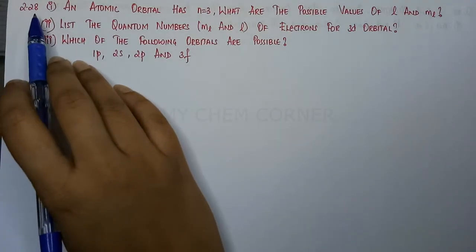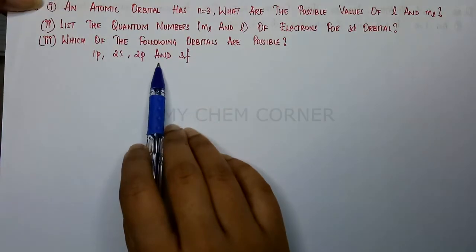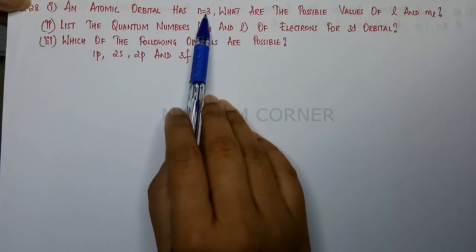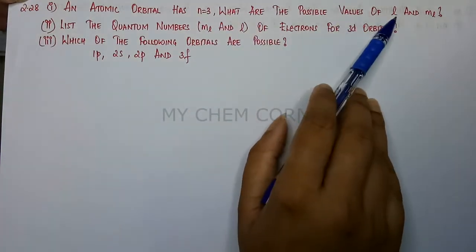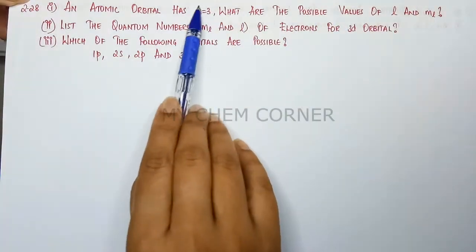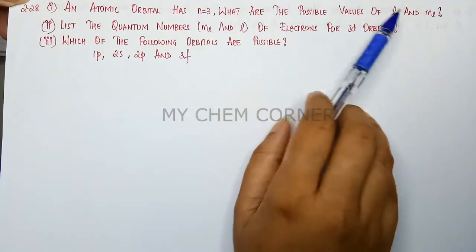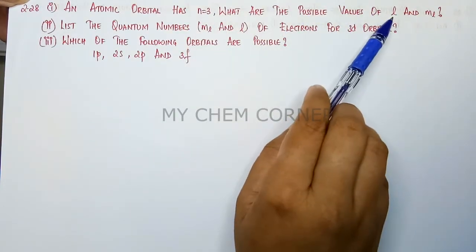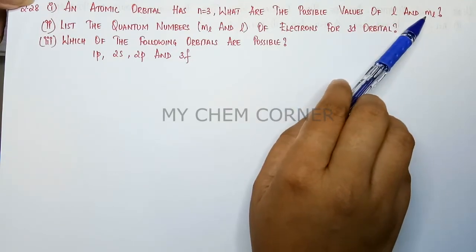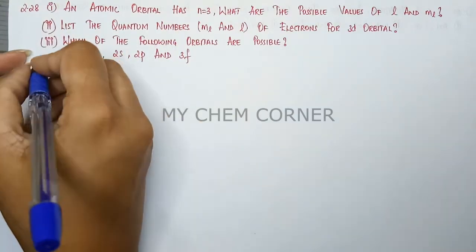Next is question number 2.28. There are three sets of questions we will solve one by one. The first says: an atomic orbital has n equal to 3. What are the possible values of l and ml? Here n equal to 3 is given, and we need to find the azimuthal quantum number l and the magnetic quantum number ml.